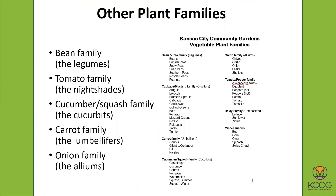Just a little bit about plant families: besides the cabbage family, there are other families to be aware of. There's the bean family — the legumes, so peas and beans. There's the tomato family, sometimes called the nightshades — tomatoes, peppers, eggplant, and potatoes. There's the cucumber and squash family, the cucurbits. The carrot family is the umbellifers. And the onion family is the alliums.